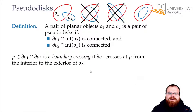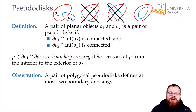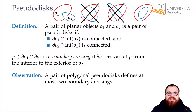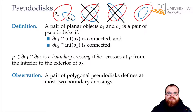We call a point P a boundary crossing between two objects if the boundary of one object crosses at P from the interior to the exterior of O2. Here we have two boundary crossings. The key observation is: if we have a pair of polygonal pseudodisks, then we have at most two boundary crossings. The valid examples had two and zero crossings; the invalid ones had four and three — if we have more, it's definitely not a pair of pseudodisks.